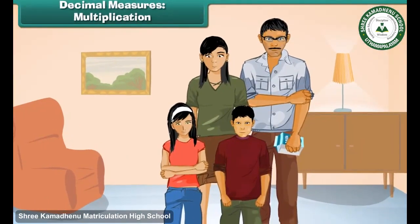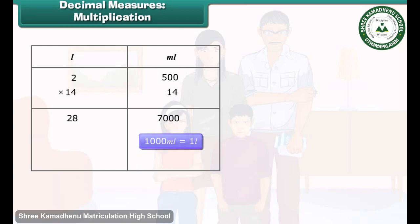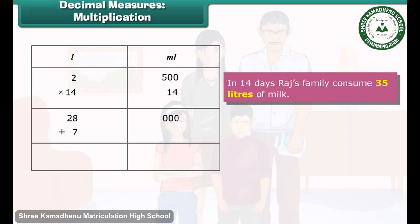Raju's family has a consumption of 2 liters and 500 milliliters of milk per day. How much milk is consumed by this family in 14 days? Multiplying 14 with 2 liters and 500 milliliters, we get 28 liters and 7000 milliliters. Since 1000 milliliters equals 1 liter, 7000 milliliters equals 7 liters. These 7 liters are added to 28 liters. Thus, in 14 days, Raju's family consumes 35 liters of milk.